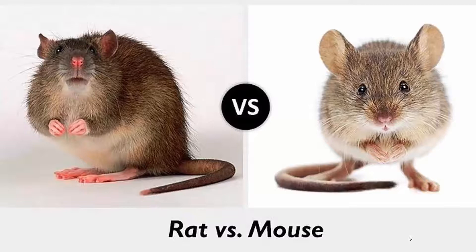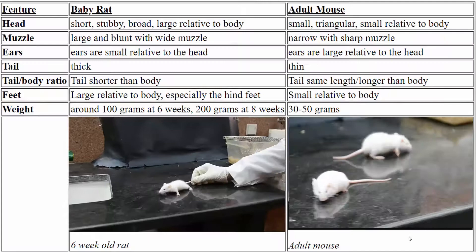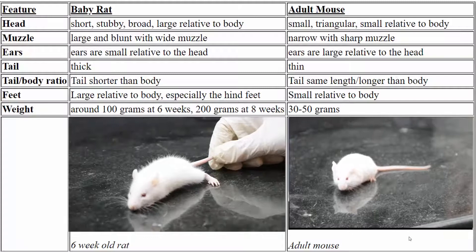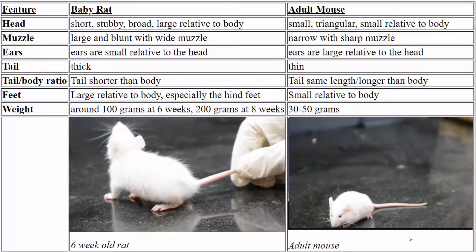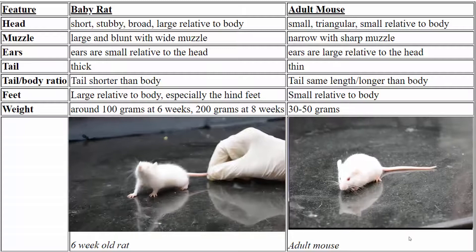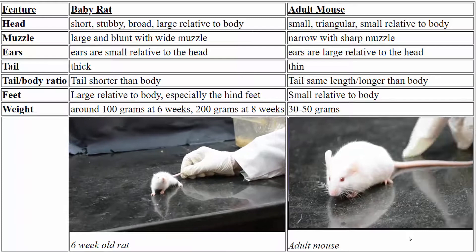However, very young rats and adult mice can be difficult to tell apart, especially for the untrained eye. So here is what to look for: baby rats will have more juvenile features than adult rodents. Their head and feet will be large relative to their bodies, and their faces will be stubby and blunt with wide noses.